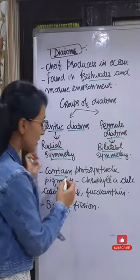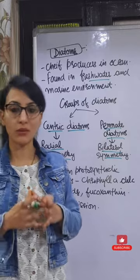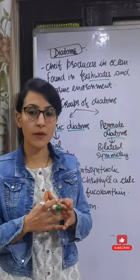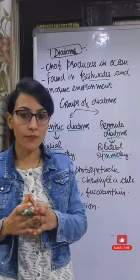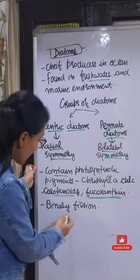Diatoms have some photosynthetic pigments, such as chlorophyll A, chlorophyll C, carotenoids, and fucoxanthins.